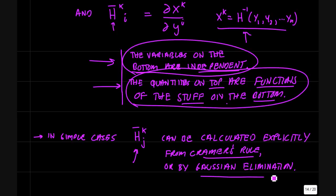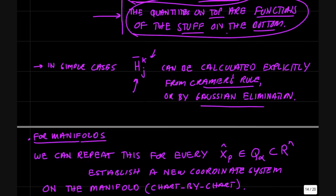In simple cases - two, three, four dimensions - you can push through these calculations and use Cramer's rule or Gaussian elimination to explicitly calculate the inverse transformation matrix h bar.